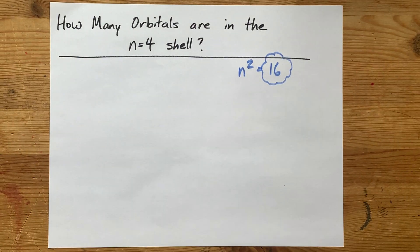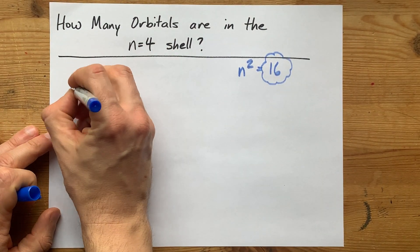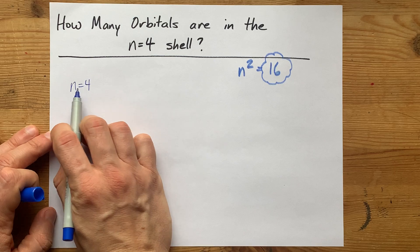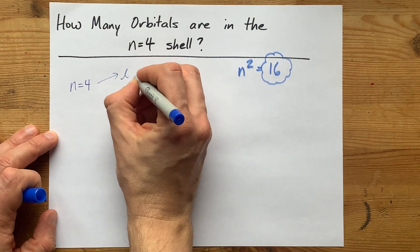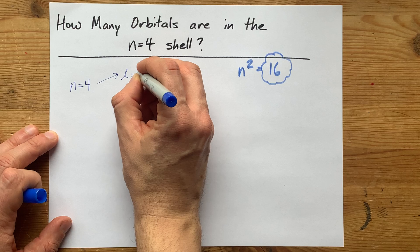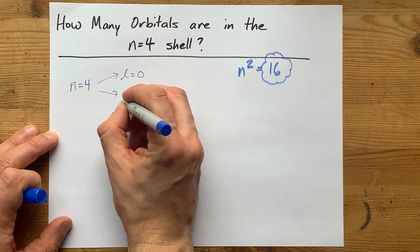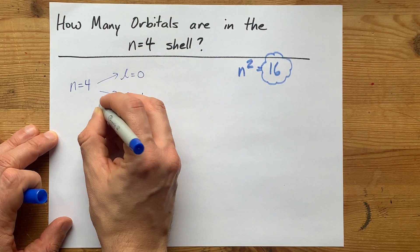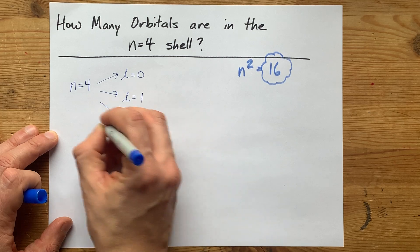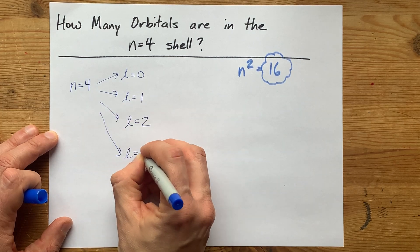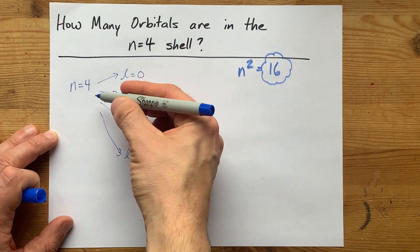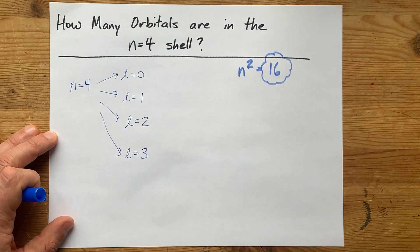I'm going to do it with quantum numbers here. n equals 4. Once you're there, you know that l can either be 0 or 1 or 2 or 3. Those are your options once n equals 4 because l goes from 0 up to n minus 1.